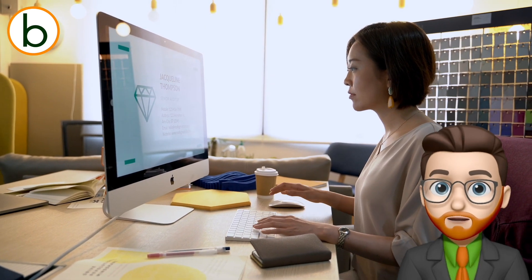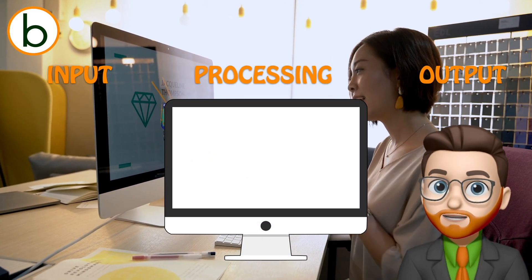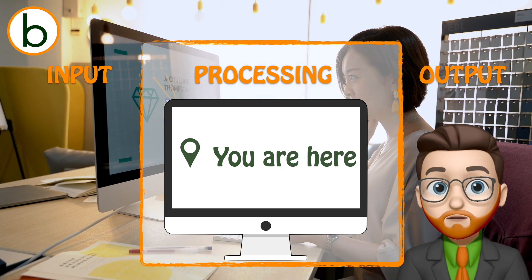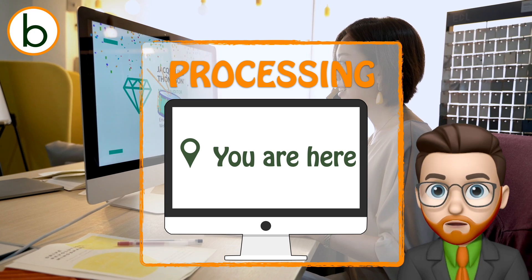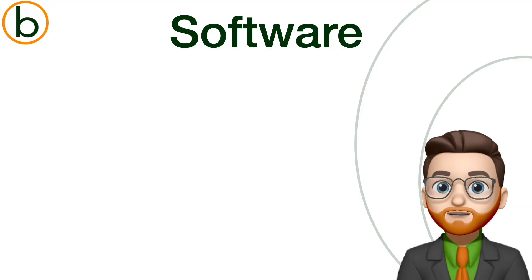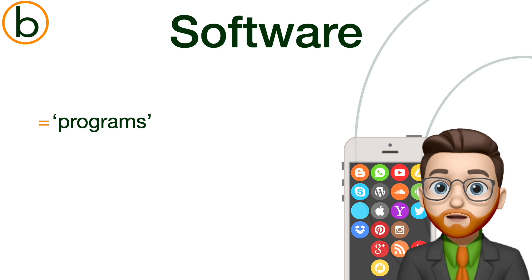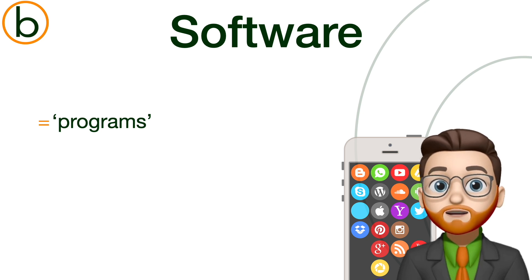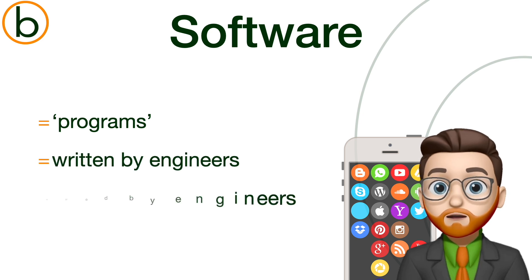Software is everything you use on a computer or a mobile device to get things done — to perform certain tasks. In other words, programs. If you think about it, you probably know a lot of different programs: Microsoft Word, Google Chrome, or the different apps on your smartphone. All of these programs have to be written, have to be created by someone, which is called programming.